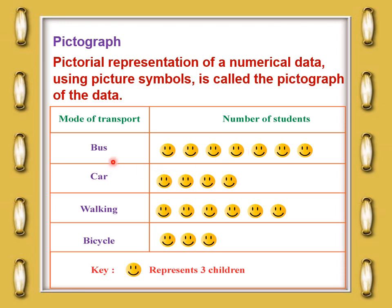For car, there are four symbols: four times three equals 12 students. For walking, six symbols: six times three equals 18 students. For bicycle, three symbols: three times three equals nine students. This is how we read a pictograph.